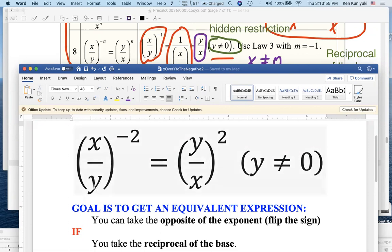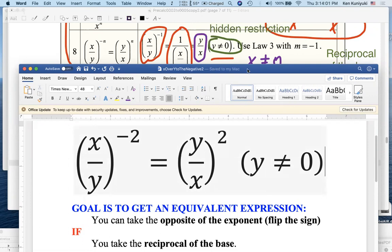You cannot divide by zero on the left here. On the left side, you're not allowed to use y equals zero, and on the right side either. Now remember, as you move from the left side to the right side, the goal is to get an equivalent expression, such that as long as these represent real values, they are equal to each other.